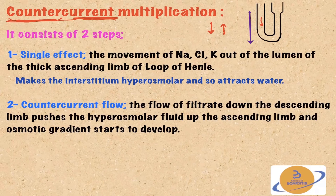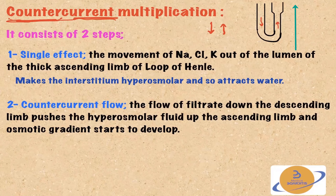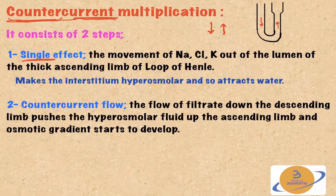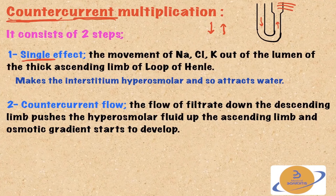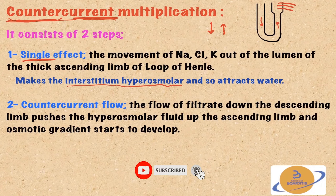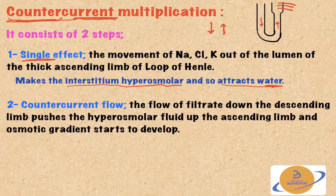The first mechanism is called counter-current multiplication. Counter-current means two currents going in two opposite directions — one current going one way and another going the opposite way. That's because the flow of filtrate in the descending limb of the loop of Henle goes in one direction, while the flow in the ascending limb goes in the opposite direction.